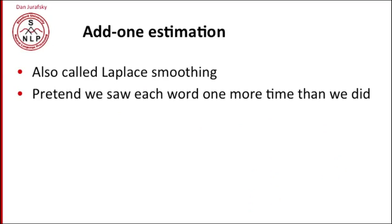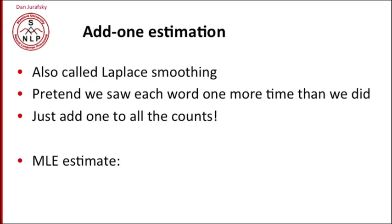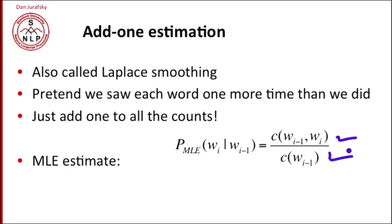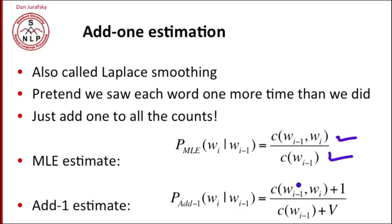And the idea is very simple. We pretend we saw each word one more time than we actually did. We just add one to all the counts. So if our maximum likelihood estimate is the count of the bigram divided by the count of the unigram, our add-one estimate is the count of the bigram plus one over the count of the unigram plus V. And we have to add V here in the denominator because we're adding one to every word that follows word i minus one.